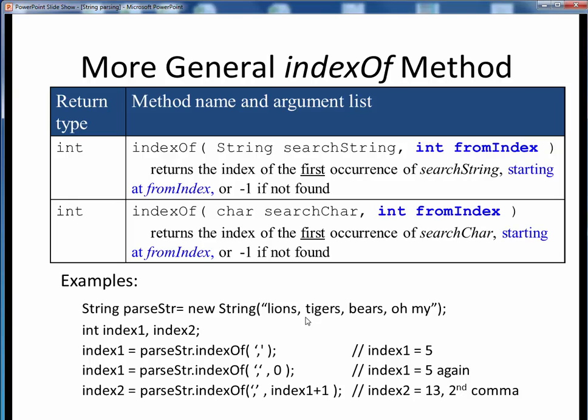For starters, consider this named string parseStr, which reads as shown here. To fully parse up this string, we need to find the locations of all the commas, not just the first one. How would we do that? Well, for starters, we would find the location of the first comma using either one of these two statements, which are functionally identical.